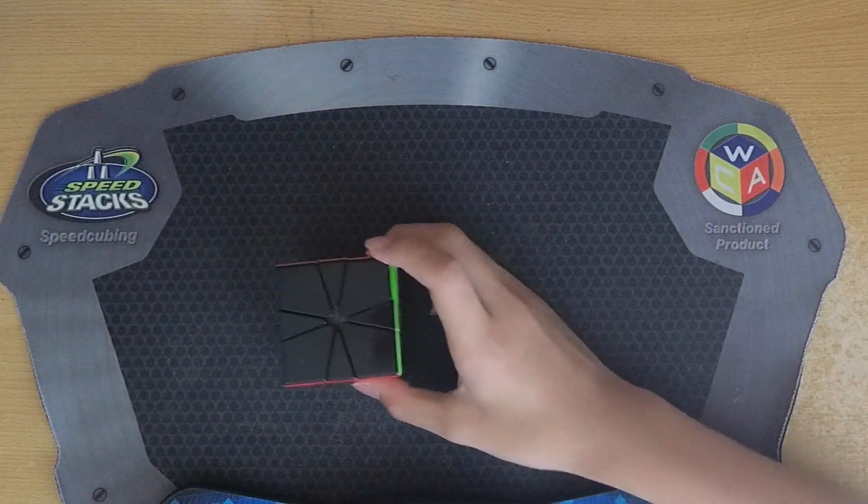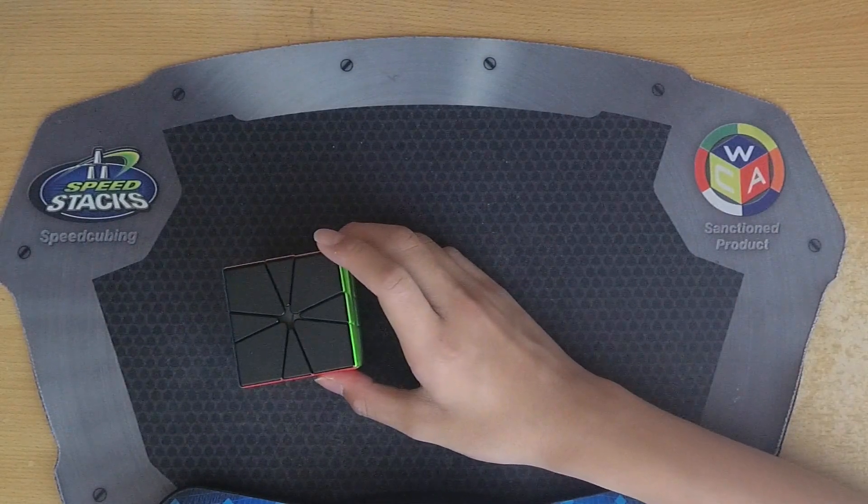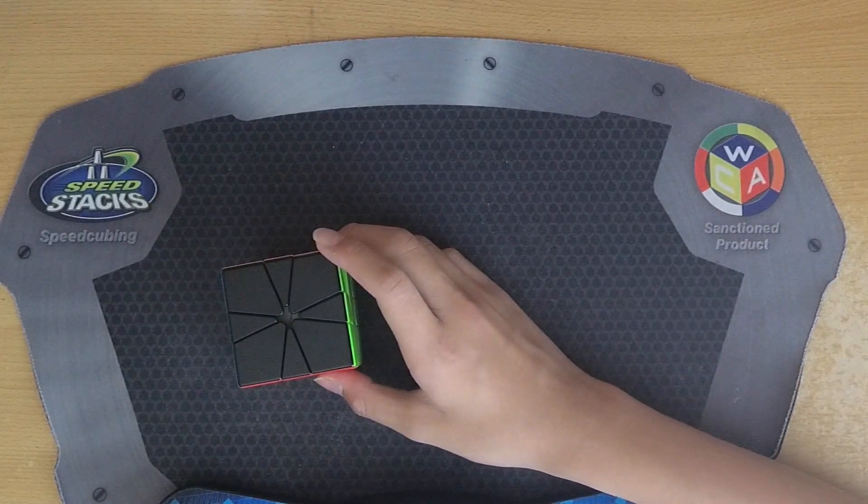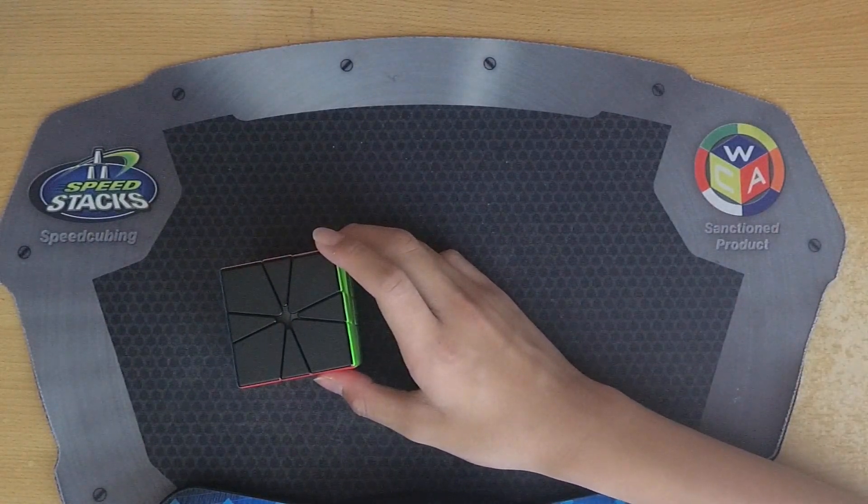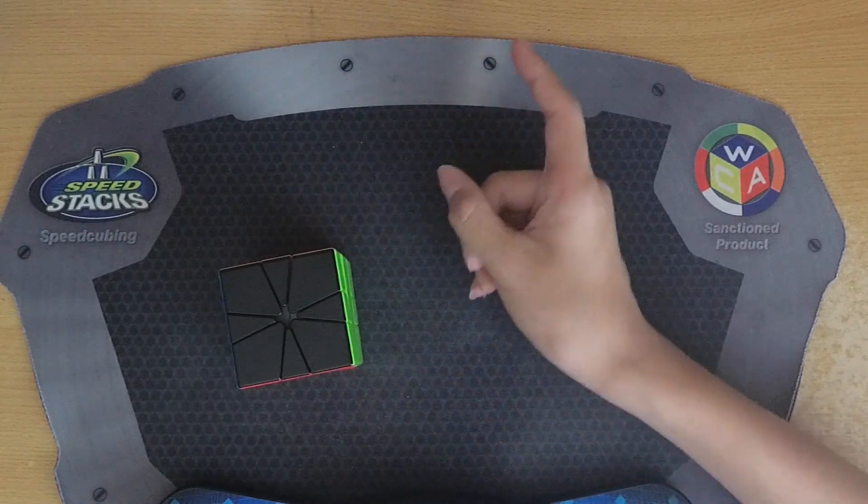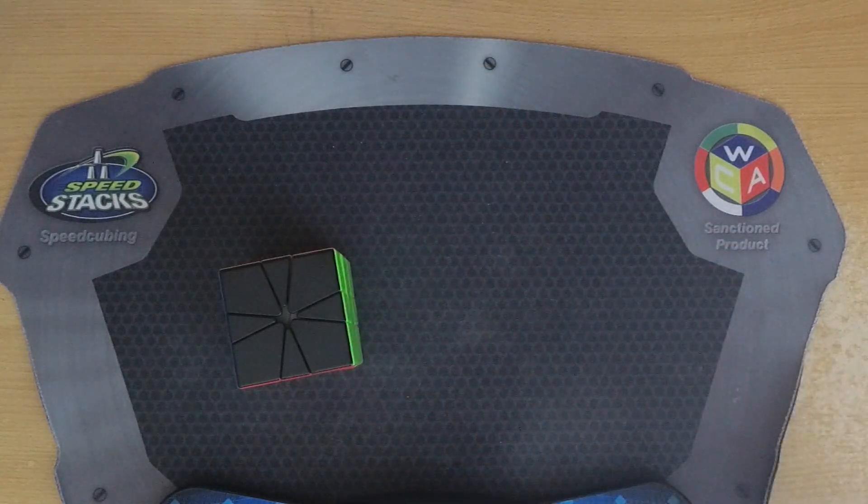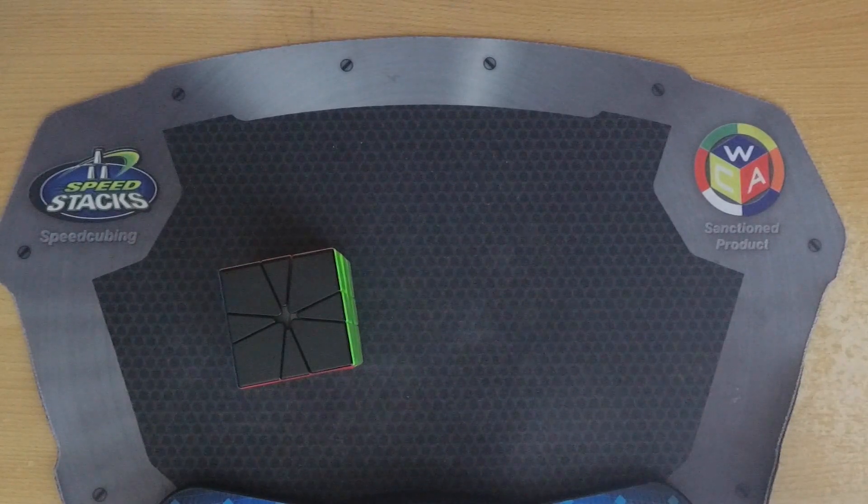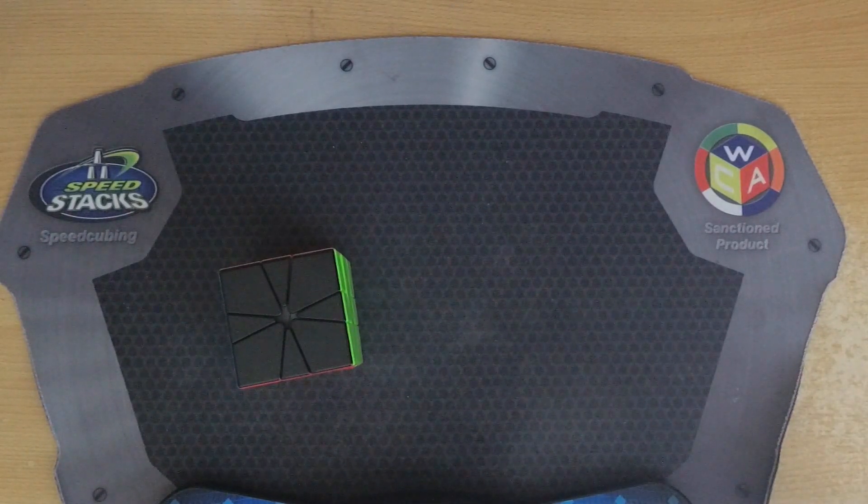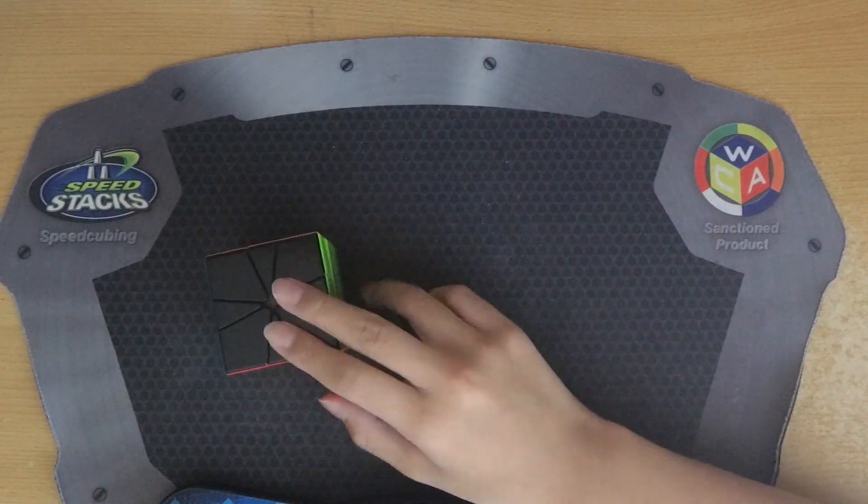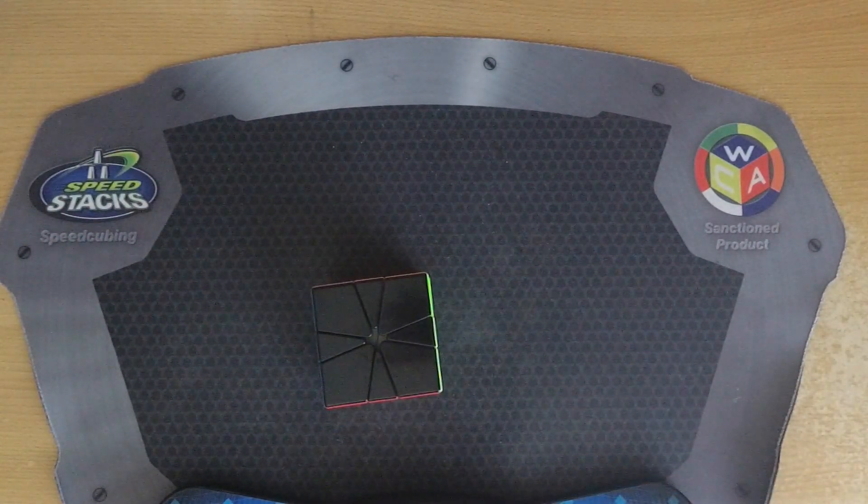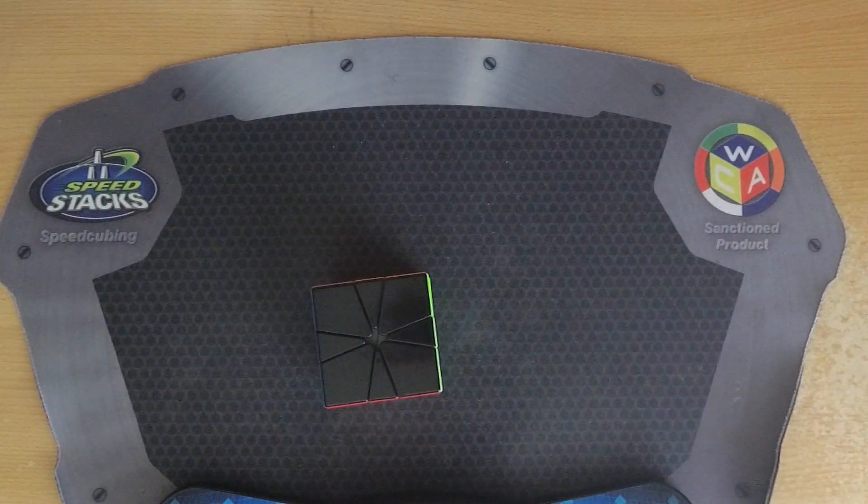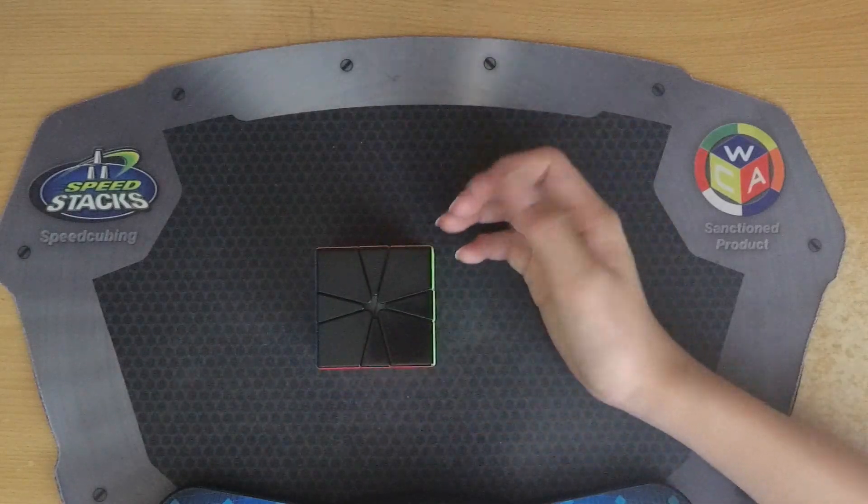So I did pause a little bit there but luckily I did end up going with that solution so otherwise it would have been something like a high 7 if I did the JJ into the bad U-perms. So although the turning wasn't great, it was like 18 slices and 2.62 SPS, I ended up going with the better solution for PBL and that ended up giving me the sub 7 that I needed for the sub 7 average which I'm quite happy with.